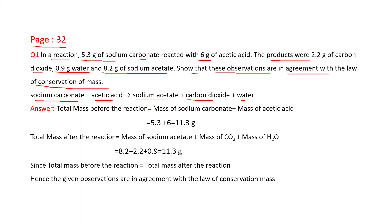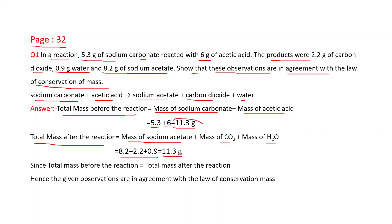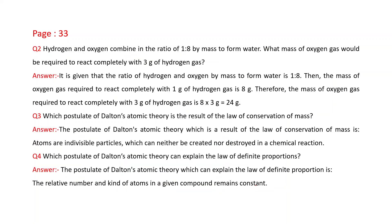According to the law of conservation of mass, mass of reactants should be equal to mass of products. First we calculate the total mass before the reaction — reactants are sodium carbonate and acetic acid: 5.3 + 6 = 11.3 grams. Total mass after the reaction — products are sodium acetate, carbon dioxide, and H₂O — also adds up to 11.3 grams. Since total mass before equals total mass after, the observations are in agreement with the law of conservation of mass.